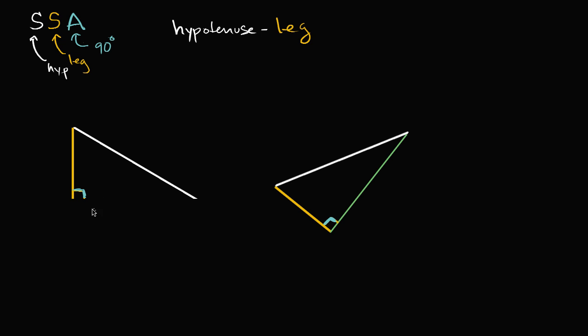To get an intuition for why two triangles are going to be congruent if each of their hypotenuses have the same length, and then the leg has the same length, we can look at these two right over here.